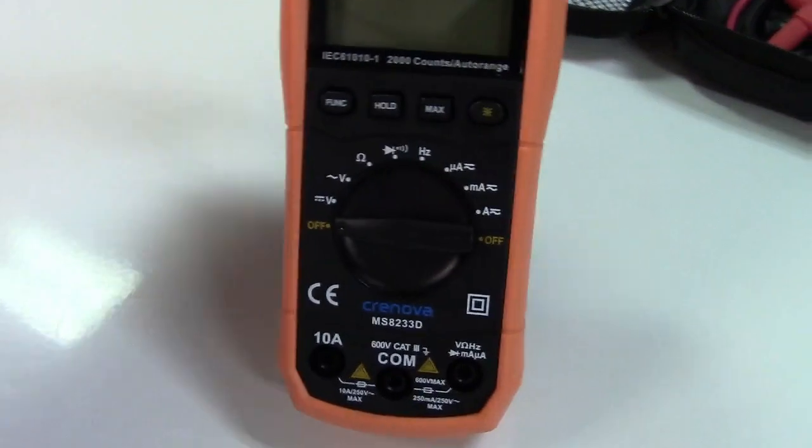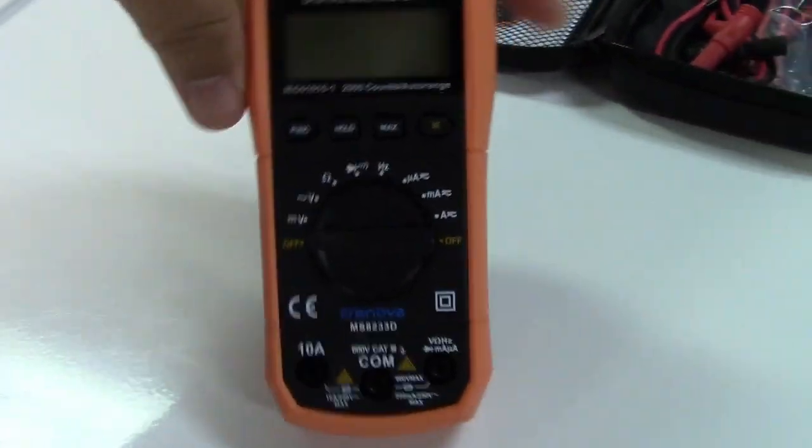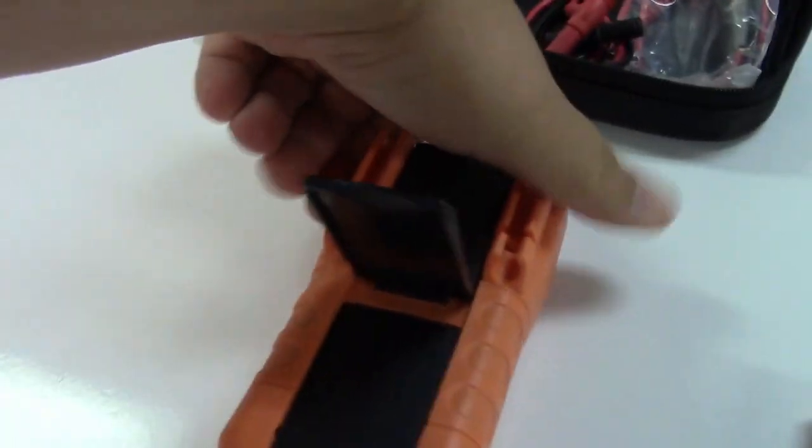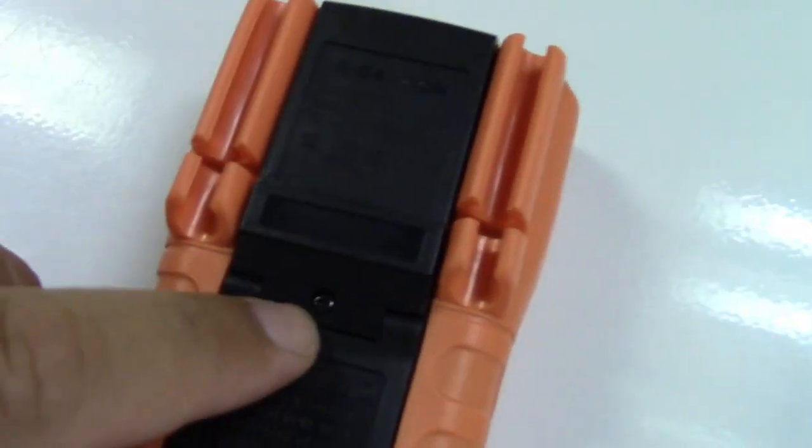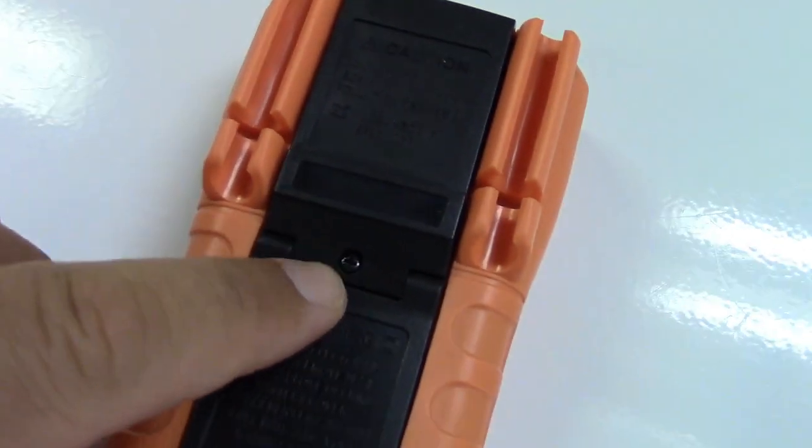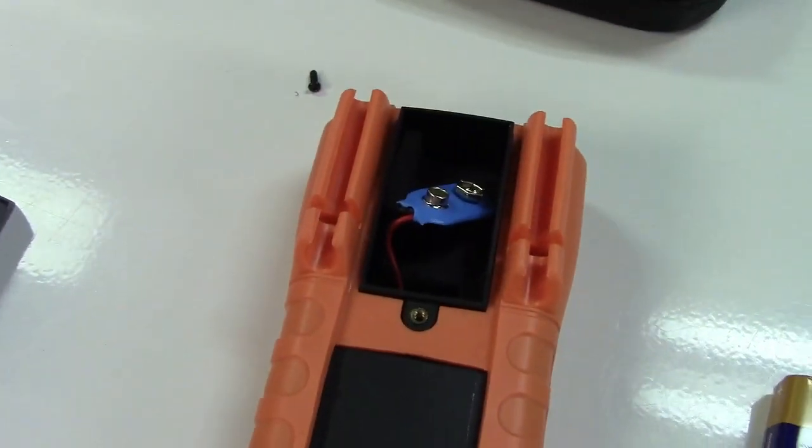So you can set it up like that. But first we need to install the battery. That goes in here, so we just need to remove that screw. Now the whole back piece comes off and we just plug the battery in and put it back.